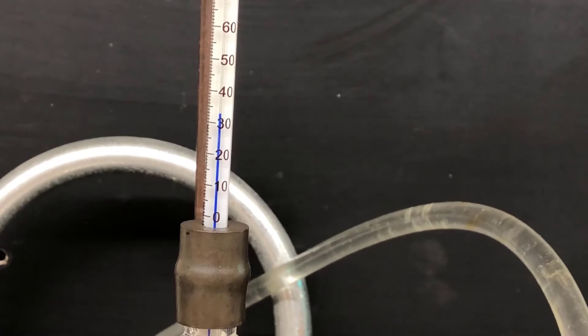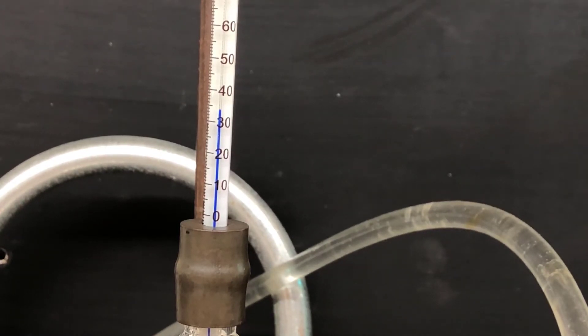It takes a while for the thermometer to reach equilibrium, so be careful not to record the temperature too early. Wait until the distillation is well underway and the thermometer has reached equilibrium, and then record the temperature range of the distilling solvent.